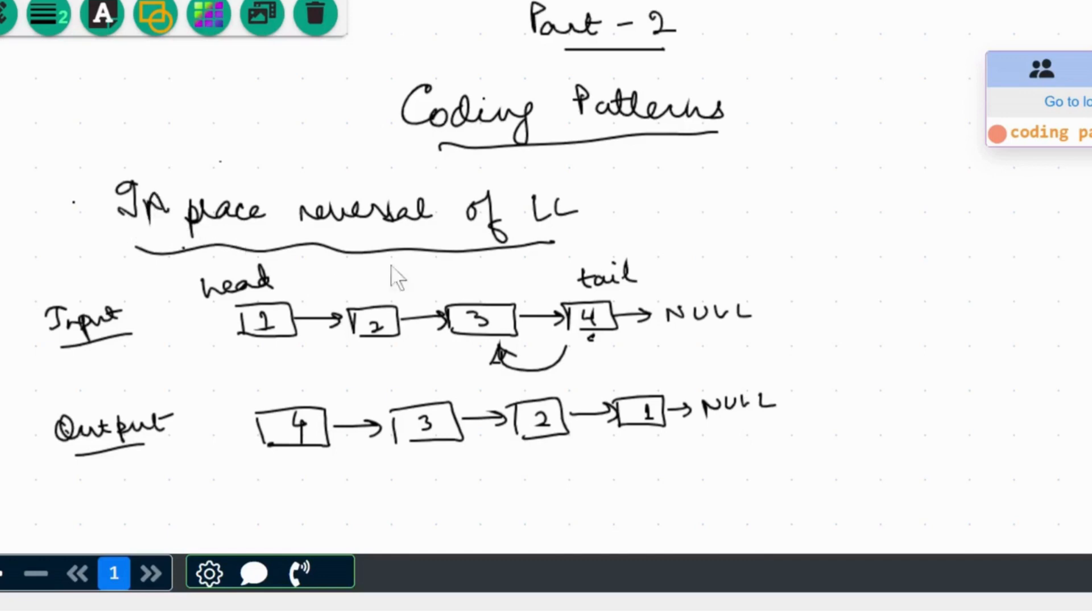When we say in-place, it means we have to do this reversal in constant space. This is the required space complexity. So this pattern talks about reversing the linked list in a constant space. So why is this a different pattern in itself? Because the concept that we learn here is applied in different kinds of questions. This is a basic pattern, like given a linked list, reverse it.